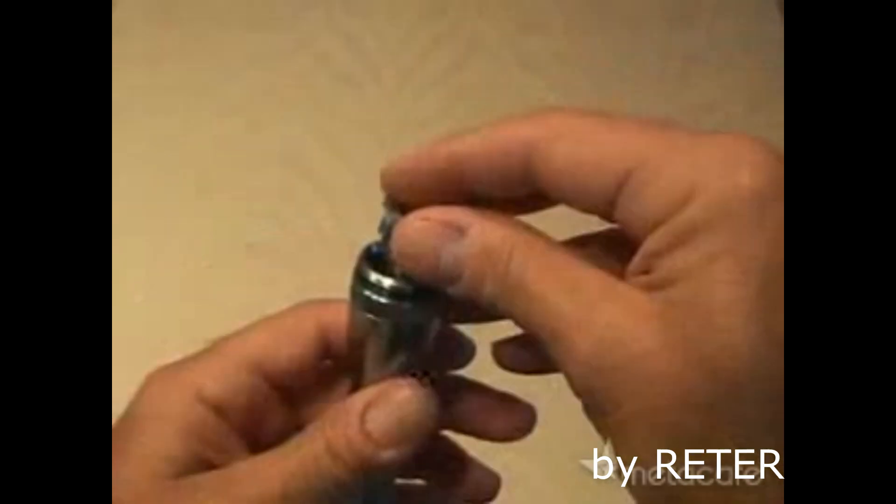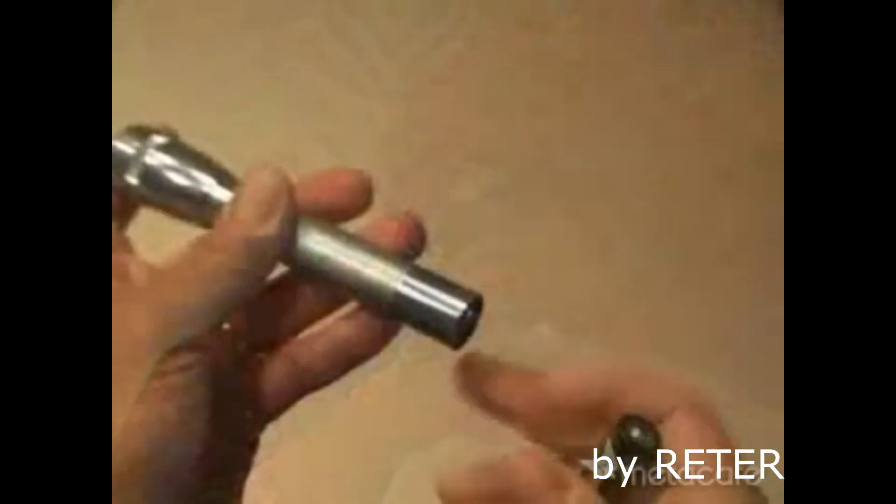You will need to drill out the existing reflector so it sits around the laser housing. Now put everything back together. Load your two AA batteries.